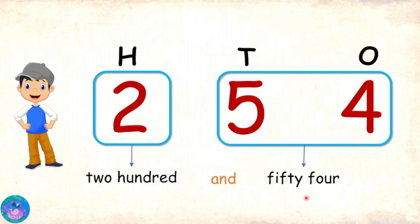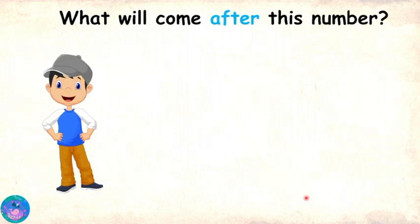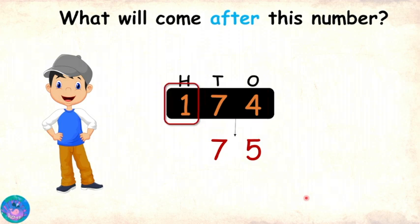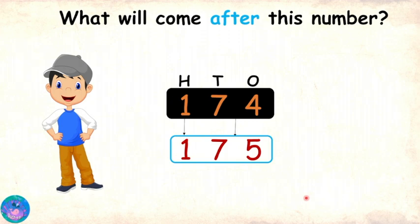To write the successor of a three-digit number, we will also divide the given number into two parts in the same way. Let's take the number one hundred and seventy-four as an example. To write its successor, we will start from the second group. The second group is seventy-four. What comes after seventy-four? Seventy-five. Correct. So, the second group of the successor would be seventy-five. Now coming to the first group, we will leave the first group unchanged. So, the first group of the successor will also be one. The successor of one hundred and seventy-four is one hundred and seventy-five.